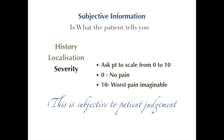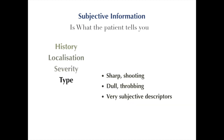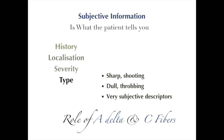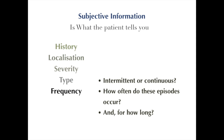Our intention is to know the intensity of pain for that particular patient. Next, coming to type of pain — is it a sharp shooting kind of pain, or is it a dull throbbing kind of pain? This is a very subjective descriptor, but it helps me understand the role of the A-delta and C fibers. We will discuss about them in further presentations. Next, we talk about frequency — is it intermittent or is it continuous? I always ask patients how often do these episodes occur, and if they occur, how long do they last?